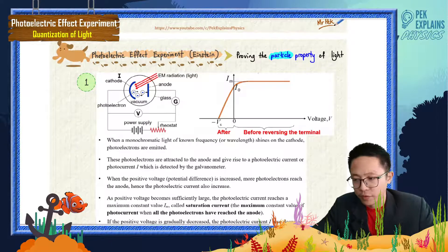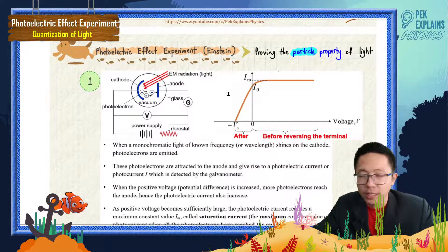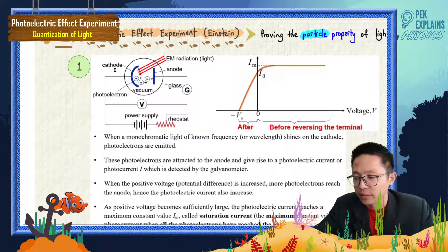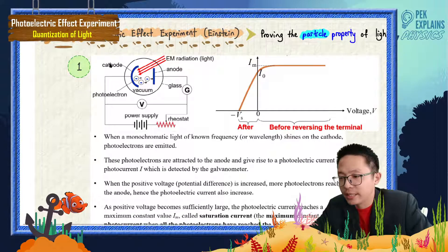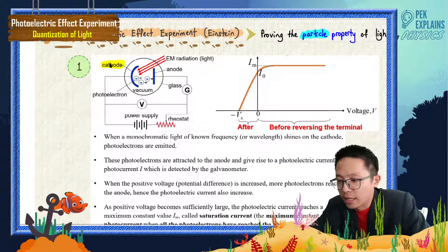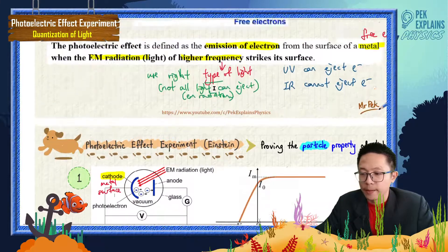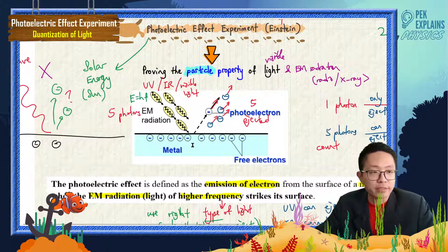Let us look at the first step of the photoelectric effect experiment. Here we have the cathode. The cathode is important — it is the metal surface, our metal surface.